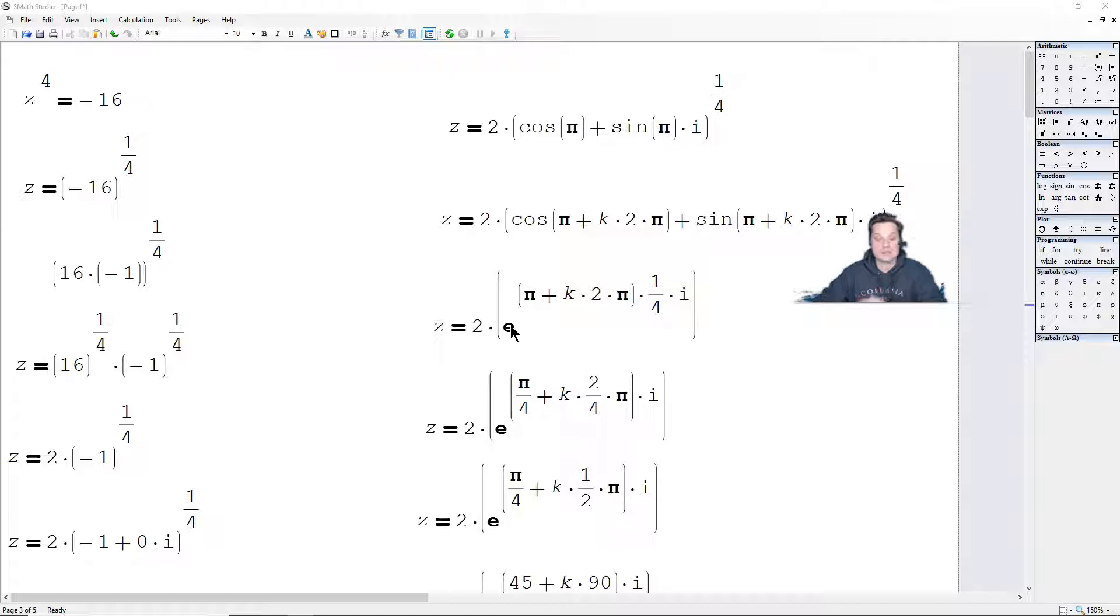That 1/4, on the other hand, that stays as written. Make sure also you have i attached to the sine part. Then I'm going to convert that into exponential notation because it's much simpler. So this will become 2 times e raised to the pi plus k times 2pi times the 1/4 times i. That 1/4 is coming from up there.